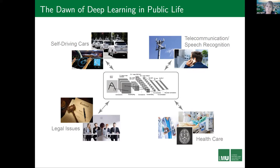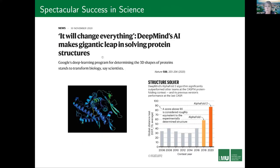Getting a bit closer to science, we saw this news just a couple of months ago, where the new algorithm called AlphaFold2 — a deep learning program — made a gigantic leap in solving protein structures. What is meant by gigantic: you first had a stagnation in the performance, and then suddenly it could even be called a breakthrough.